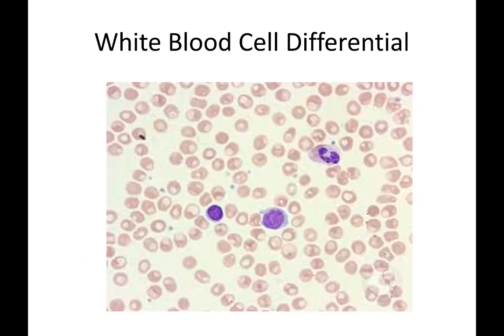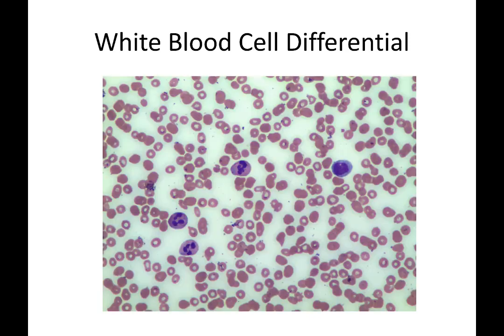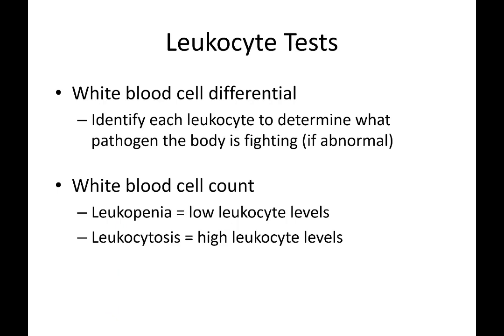In a white blood cell differential, you look at a blood slide to identify the various types of white blood cells and determine a percentage of each. For example, we can see neutrophils, monocytes, and lymphocytes in the images. Some leukocyte tests include the white blood cell differential and the white blood cell count. A low white blood cell level is called leukopenia; a high level is leukocytosis.